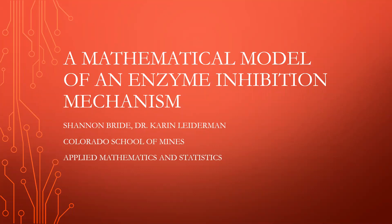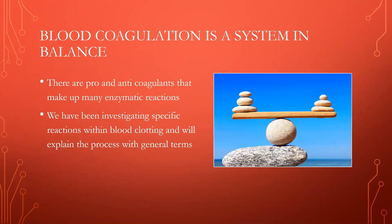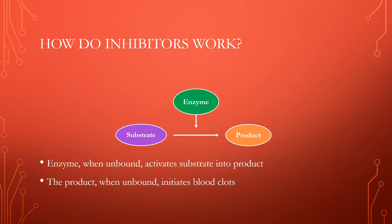Hi, my name is Shannon Bride, and this is a brief explanation of a mathematical model of enzyme inhibition mechanism that I am currently working on. Blood coagulation is a system in balance, full of pro and anti-coagulants that are necessary for successful blood clotting. We have been investigating how a specific inhibitor works in the bloodstream, but is not yet fully understood, and will explain how we are working to better understand it.